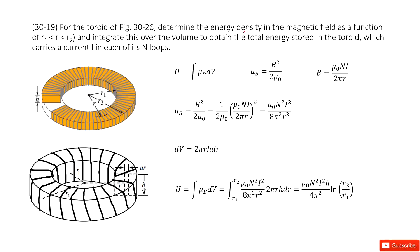So actually, this problem tells you the solutions, how to solve them. We first find the energy density in magnetic field. So that is μB. Very straightforward,